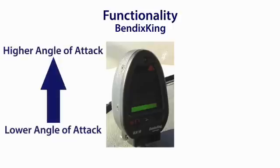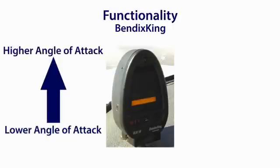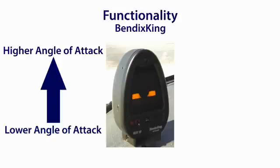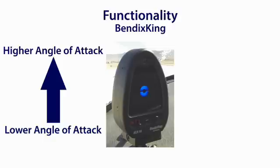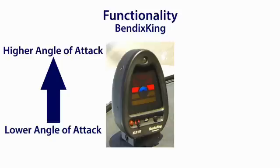The Bendix King device features an on-speed donut and a stall warning arrow indicating that the angle of attack must be reduced. It gives a verbal warning indicating that the pilot must take action to correct the AOA. This warning is usually in advance of the installed stall system, which gives the pilot advanced warning for stall avoidance.